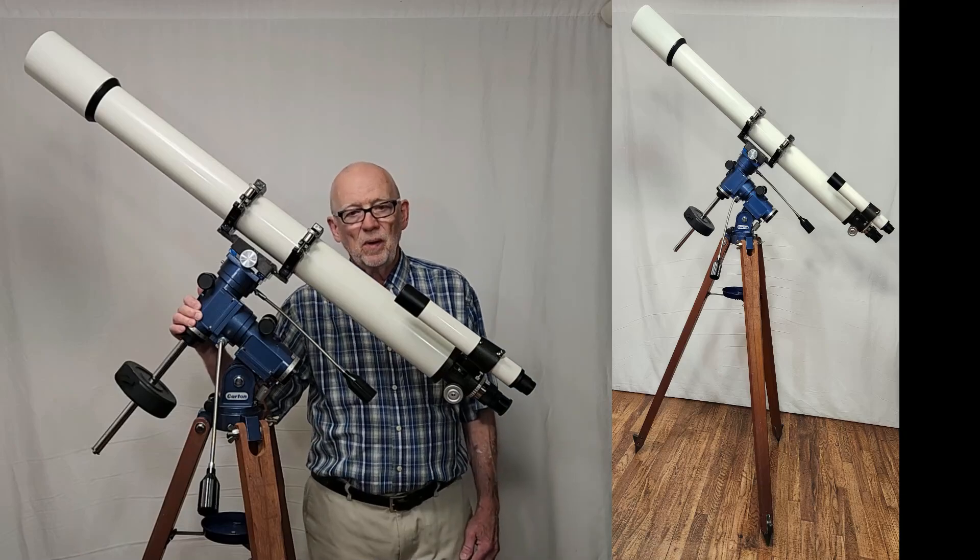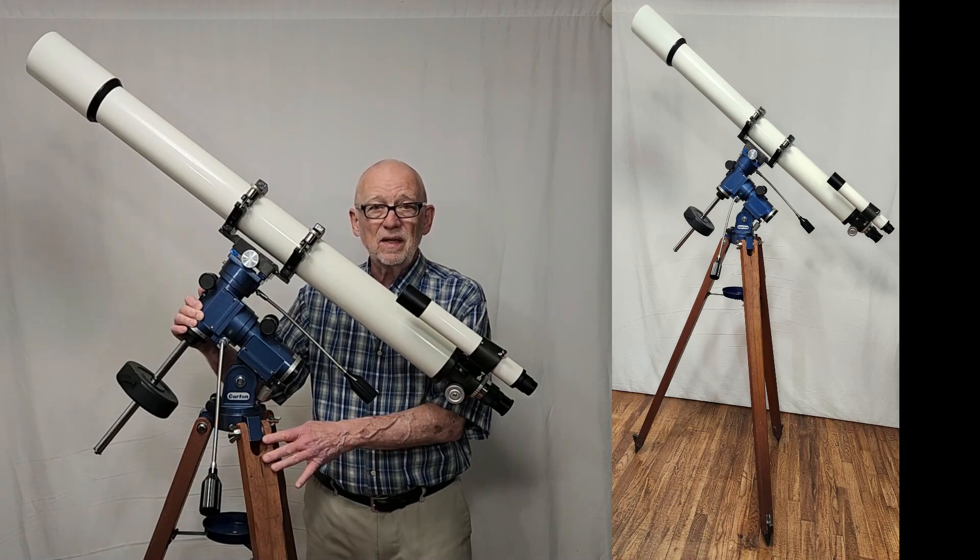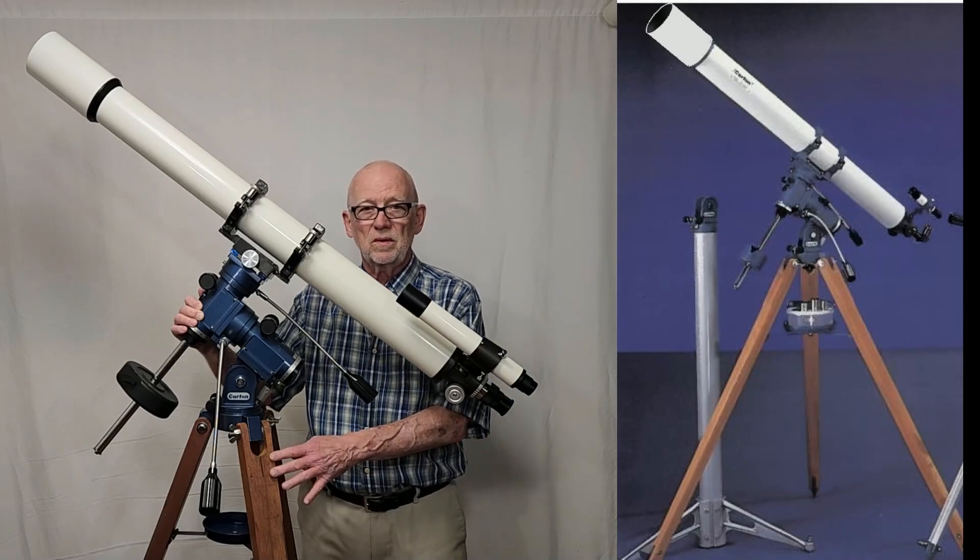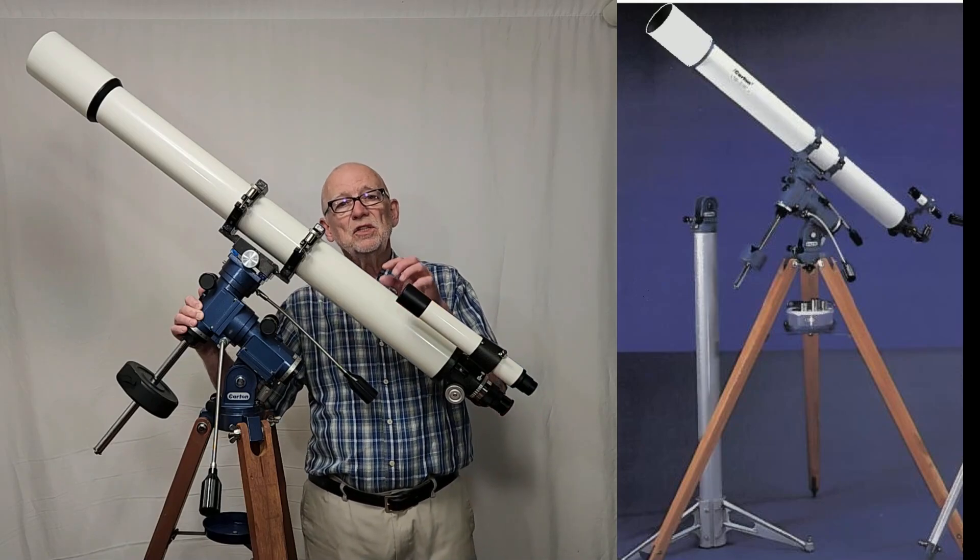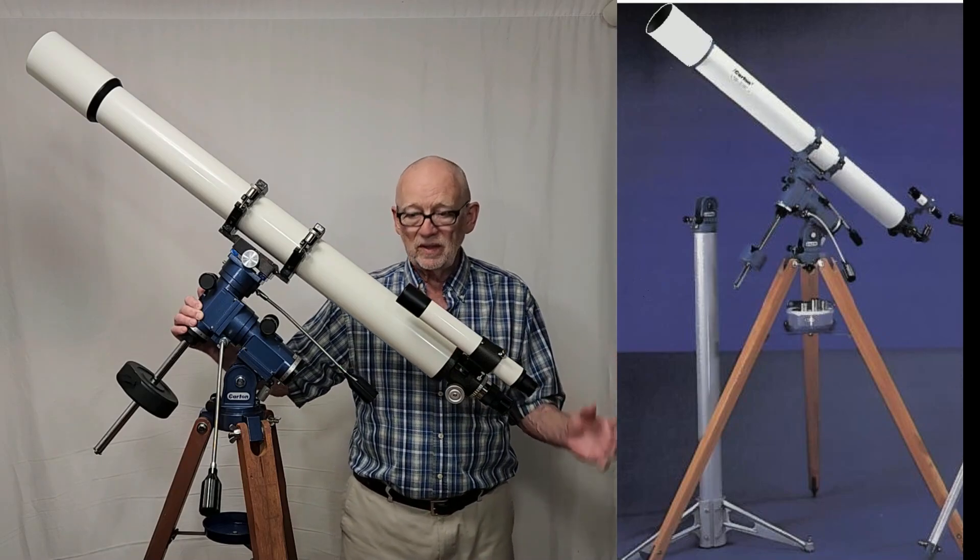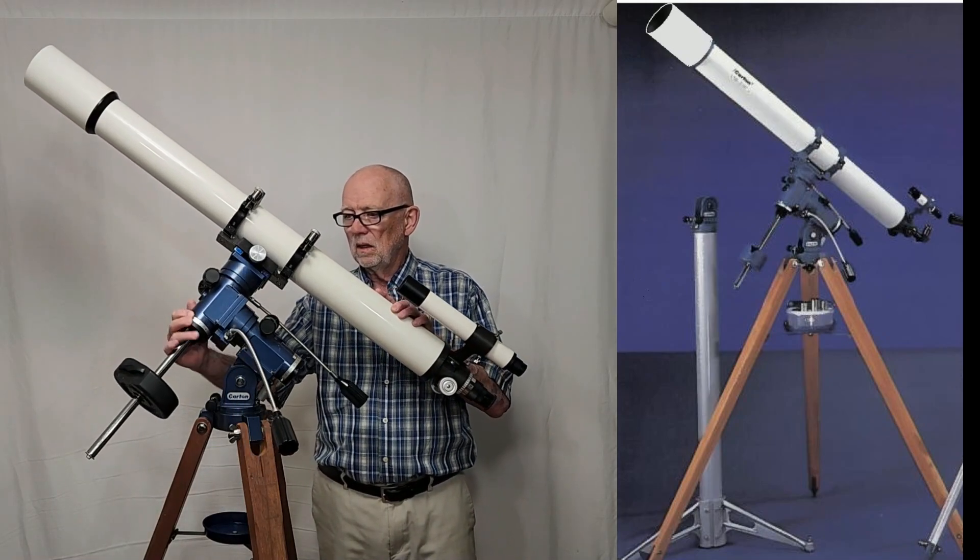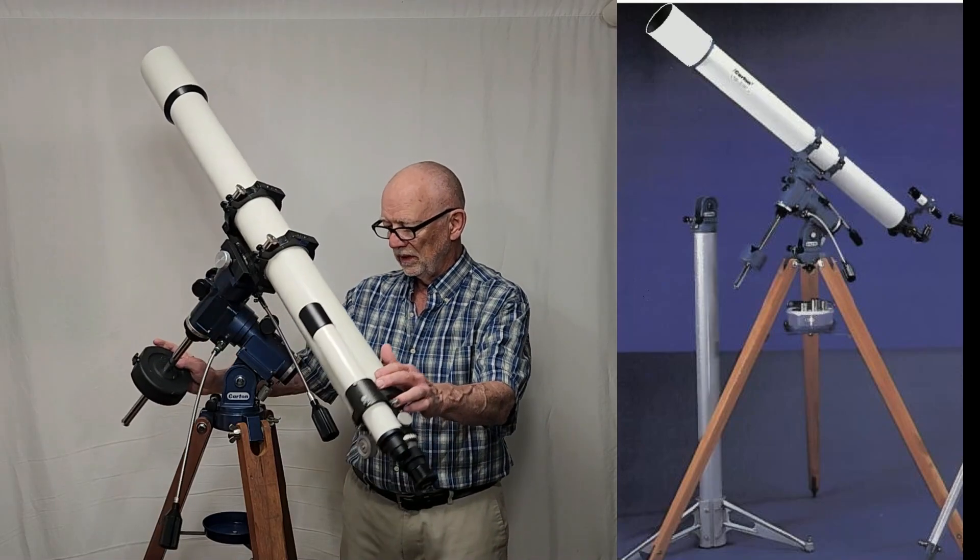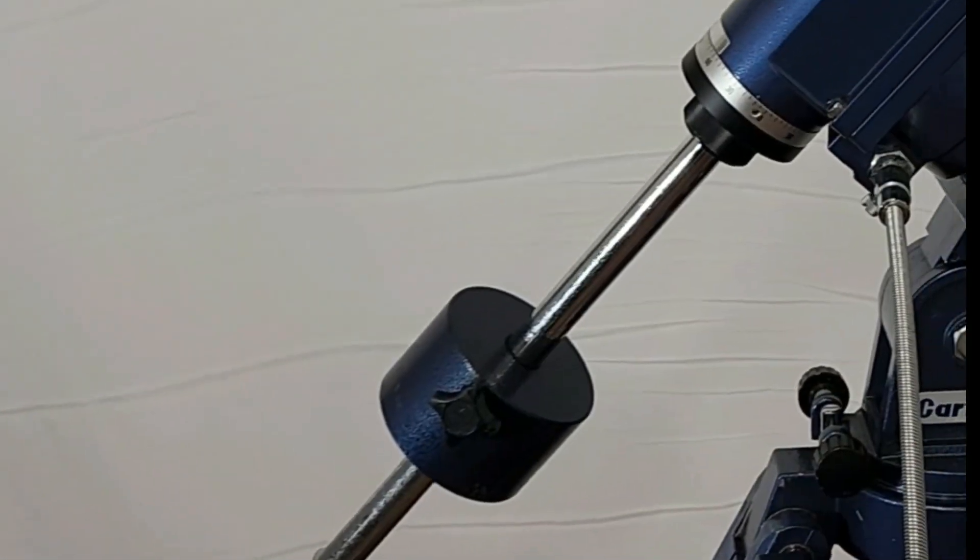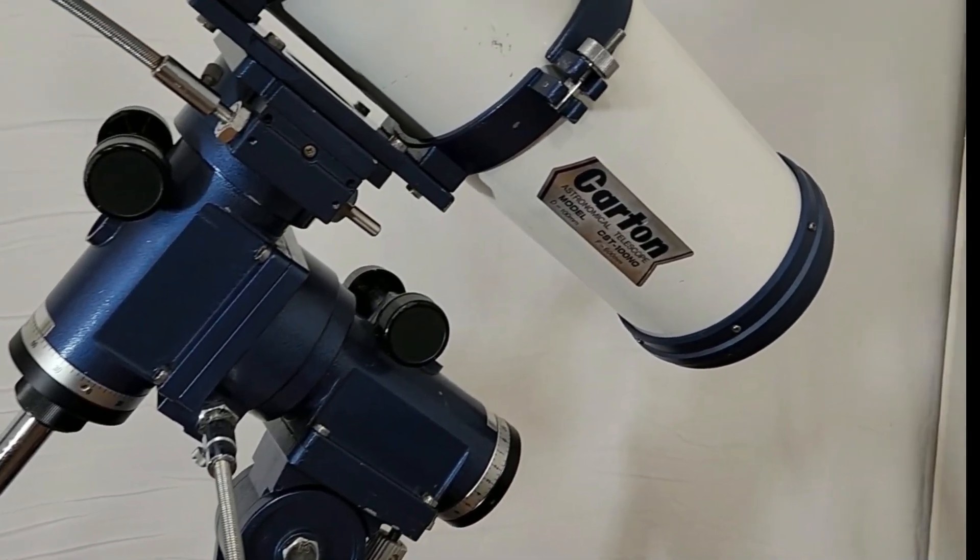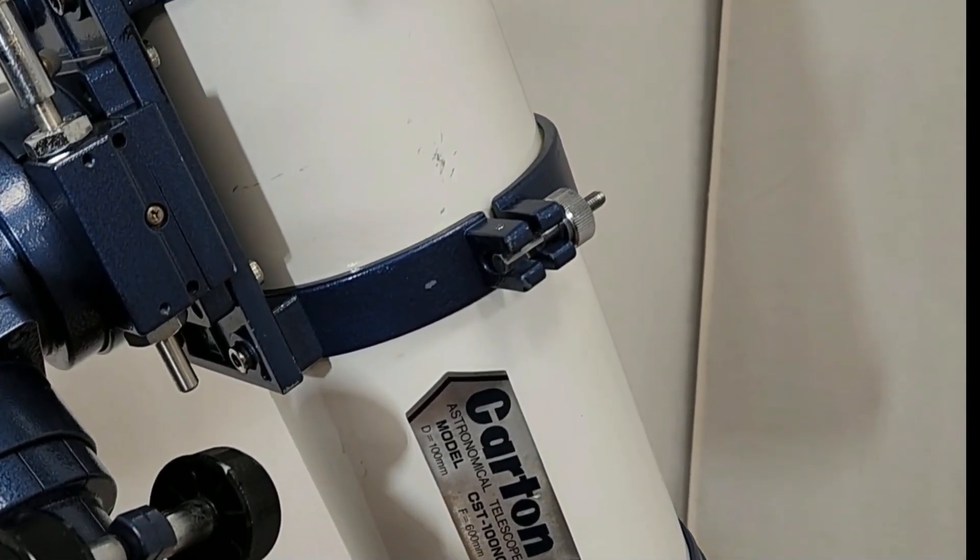And now I have the CST mount set up on some longer legs. These are not original to this mount, but they appear to be identical. They're from Vixen actually, but they appear to be identical to the ones that cartons sold with their mounts for a longer, a taller tripod. And I've got a Takahashi TS-80 semi-apochromat mounted on it. I think you'll agree it looks perfect. It fits nicely. I had to put a bigger counterweight on it. I think you'll agree it looks really good.